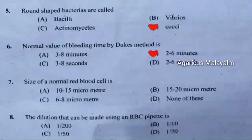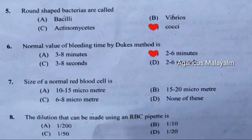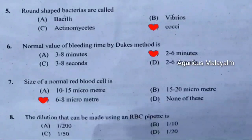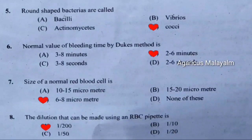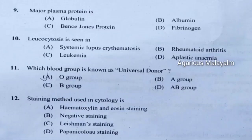Seventh question: Size of a normal red blood cell is. Correct answer is option C — 6 to 8 micrometers. Eighth question: The dilution that can be made using an RBC pipette is. Correct answer is option A — 1 by 200. Ninth question: Major plasma protein is. Correct answer is option B — albumin.